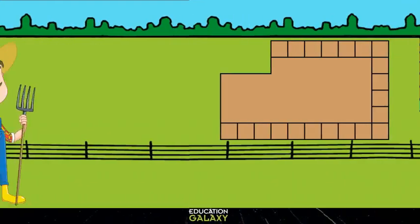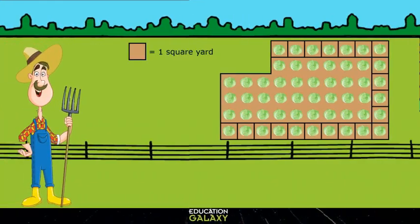Now it's on to the lettuce. I can break up the plot here into two rectangles. Let's calculate the small rectangle first. Doing base times height, we get 7 times 2. That gives us 14.